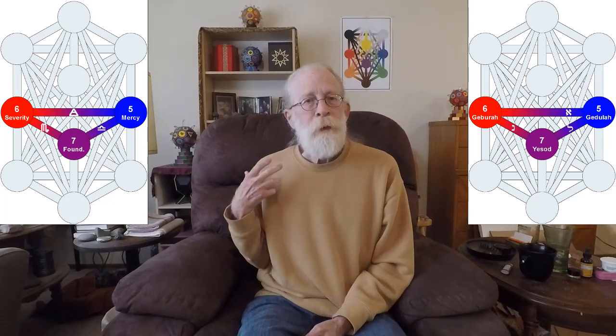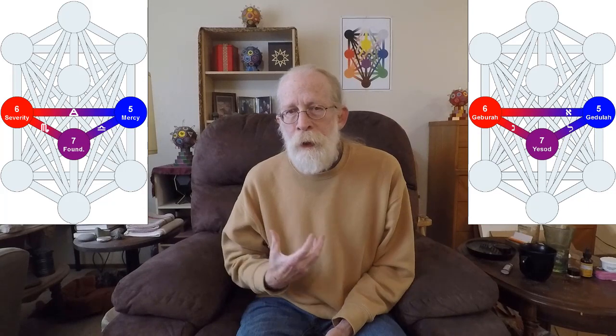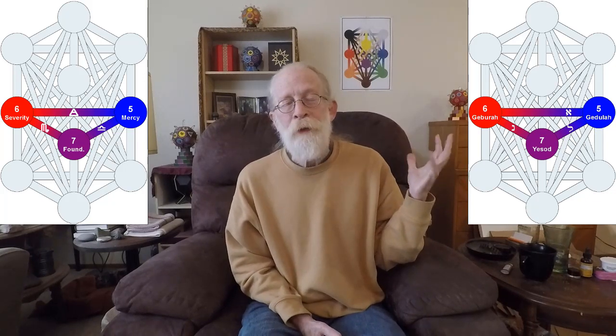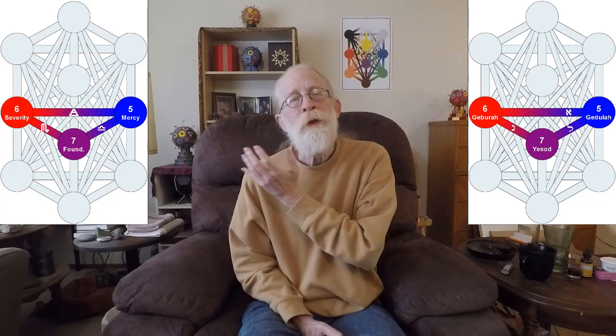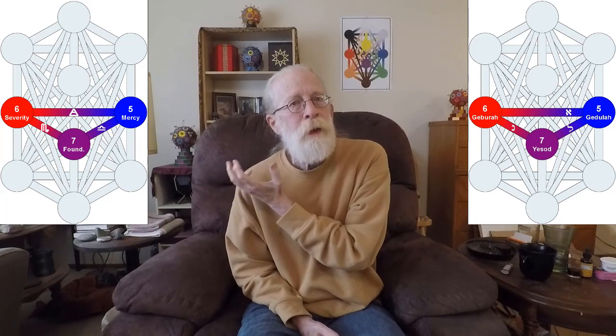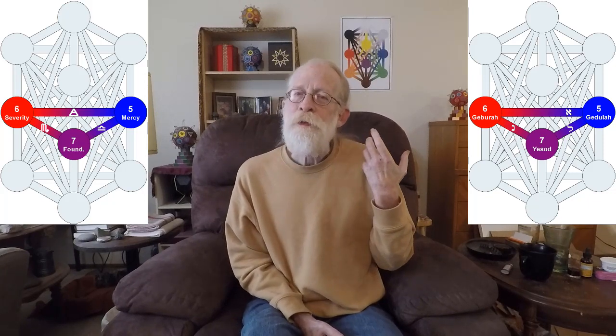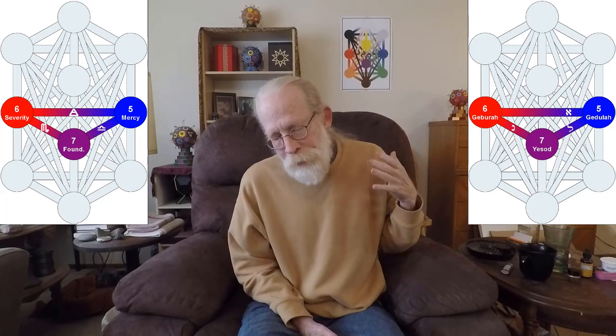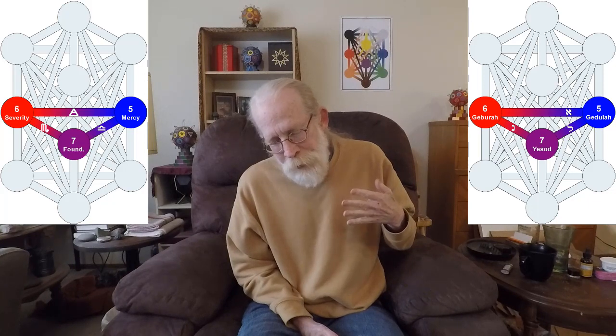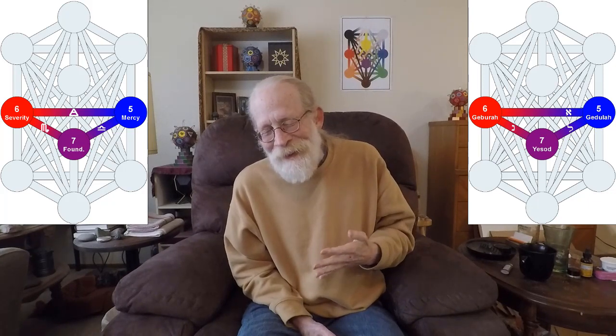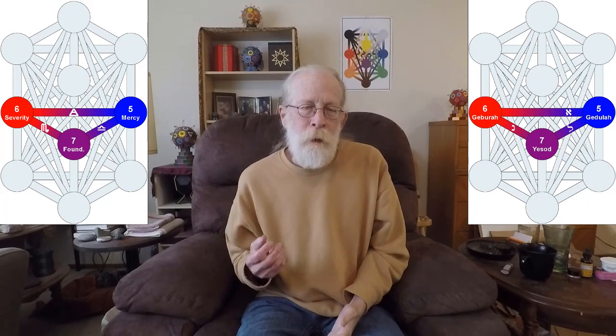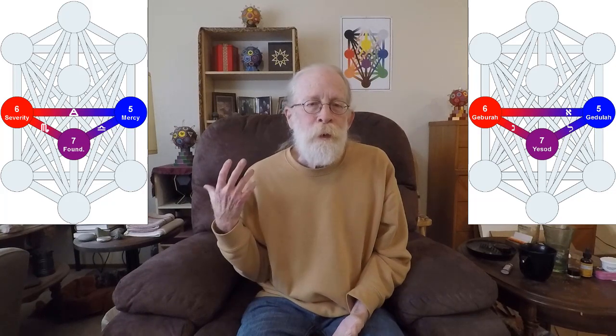The second gate is from Geburah down the path of Nun into Yesod up the path of Lamed to Gedula along the path of Aleph with the flow over to Geburah. And then we go back against the flow of Aleph to Gedula down that path of Lamed the equal liberator into Yesod and then up that path of Nun to Geburah.